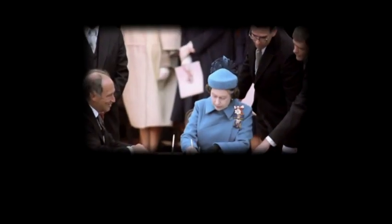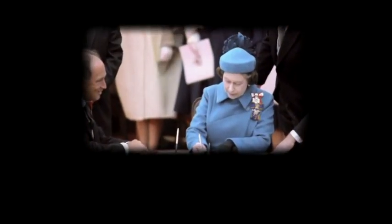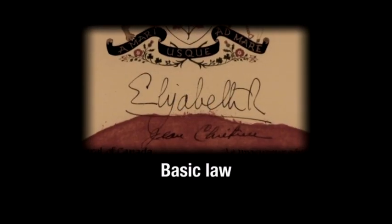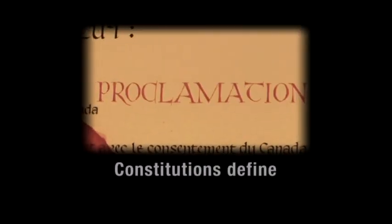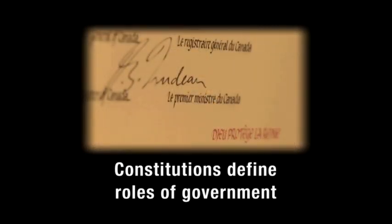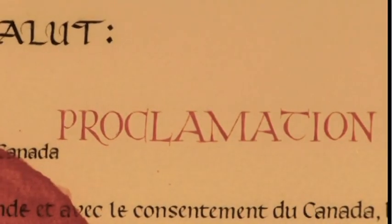We are now at Module 4 in our series, and in this module the question we hope to answer is: why are constitutions important to effective federal governance? A constitution is the basic law of a country, the rules that all governments must respect. Constitutions in federal countries are very important because they spell out the roles of the different orders of government and provide the legal foundation for the federal system.